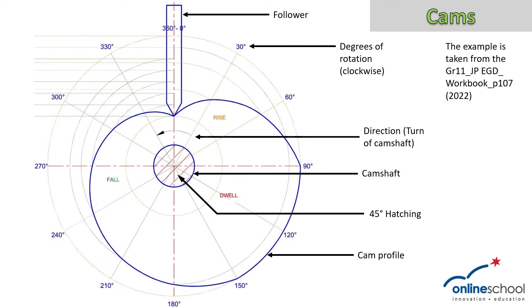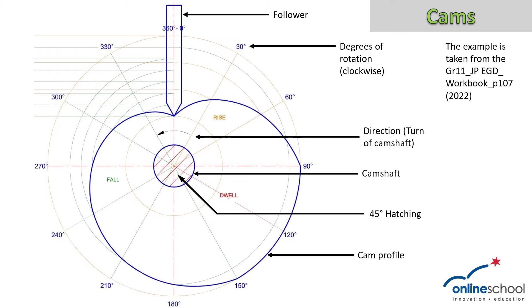Next, we will be looking at the hatching of our cam shaft. We remember that with cam shafts, when we cut it through, we always hatch it at a 45-degree angle, and it is also proper machine hatching where the hatching is equally spaced. Then we also have the cam profile, which is the outer rim of this cam, and the wedge-ended follower will then run on this outer-edged rim.